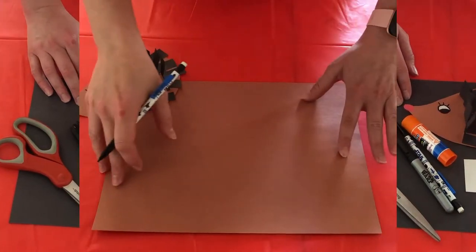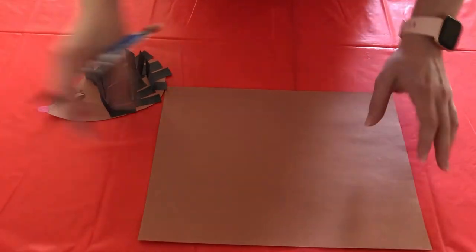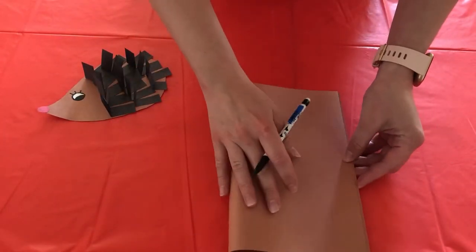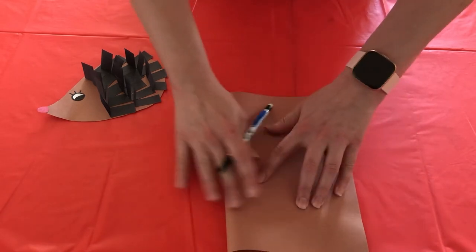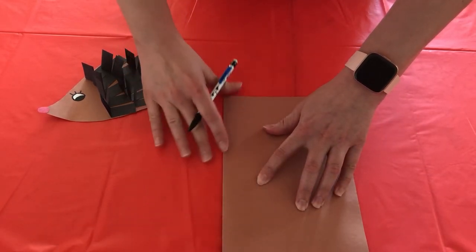So let's go ahead and get started. The first step is going to be to take your brown paper. I'm actually going to fold mine in half and create two pieces. That way if you want to make another one afterwards you can.